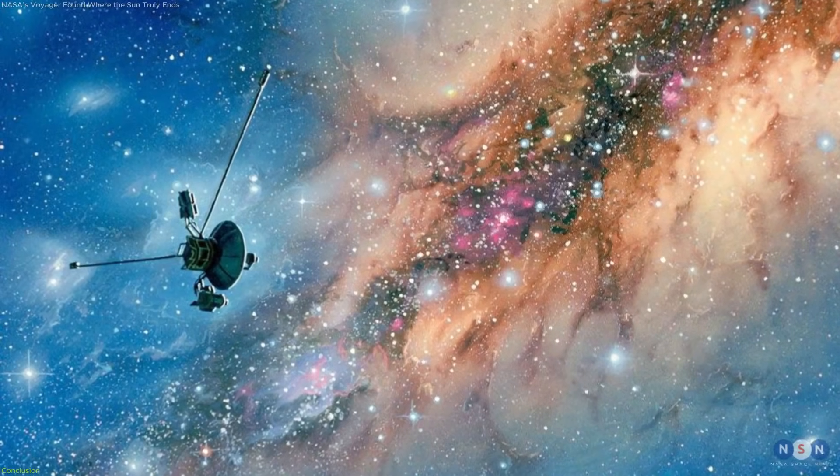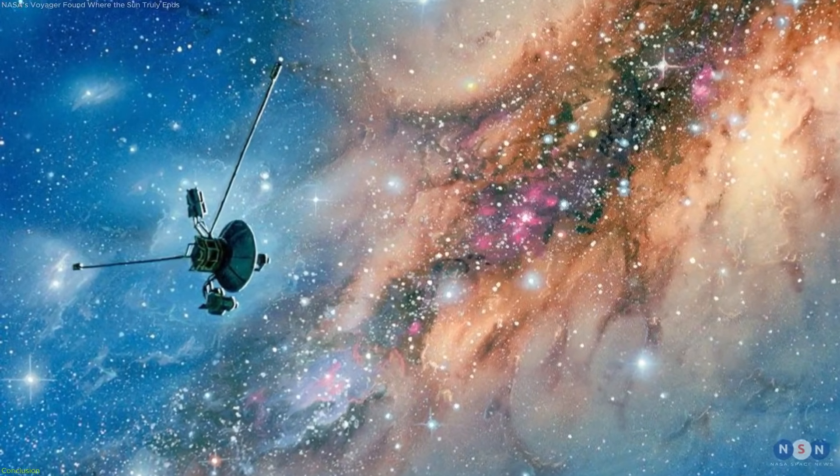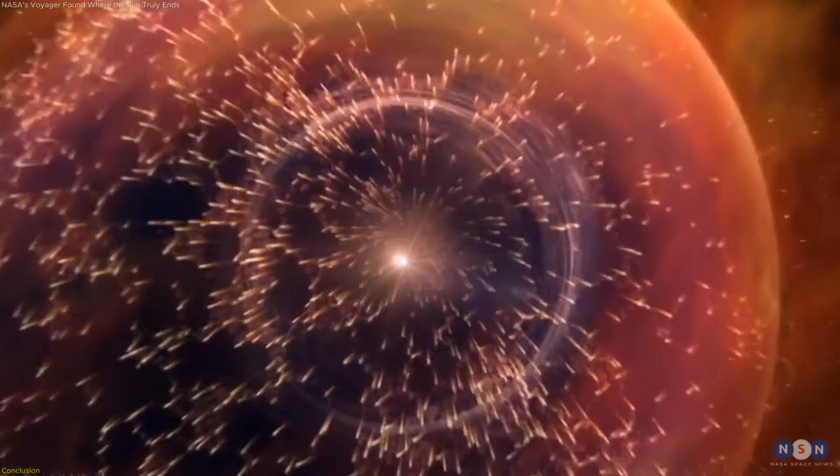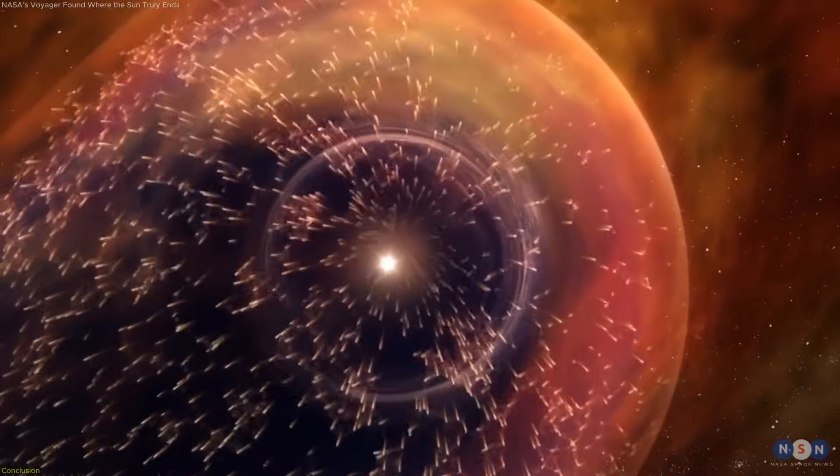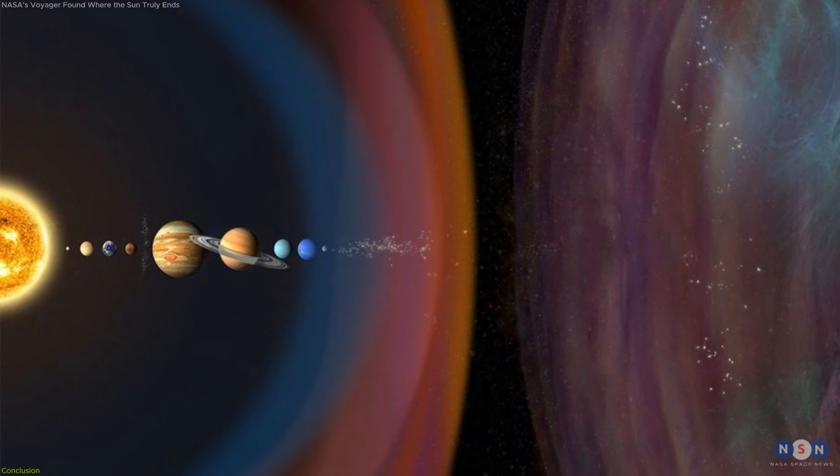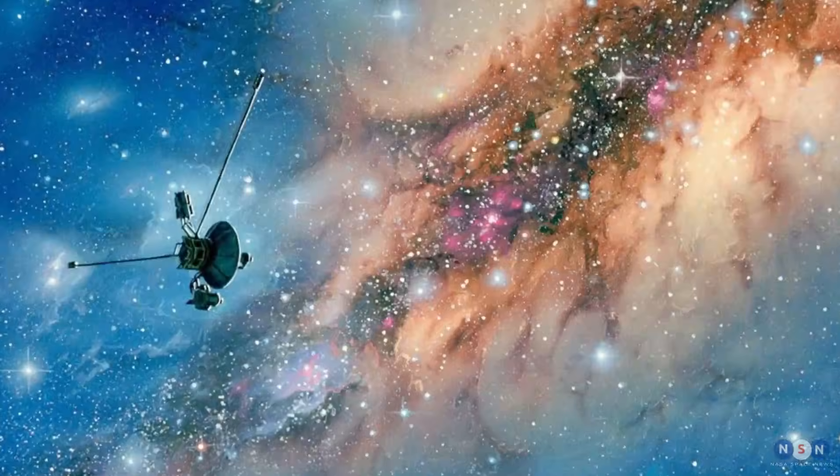Voyager has revealed that the true edge of the solar system is a magnetic boundary, not a distant planet. Beyond it lies a structured and active interstellar environment shaped by the Milky Way. For the first time, humanity is directly measuring the space between the stars.